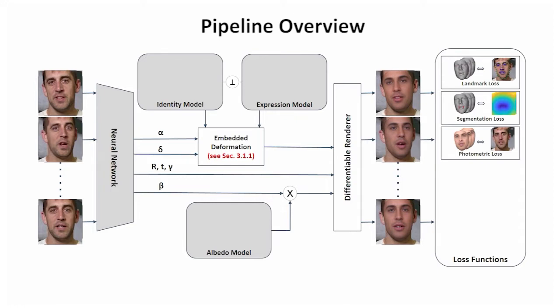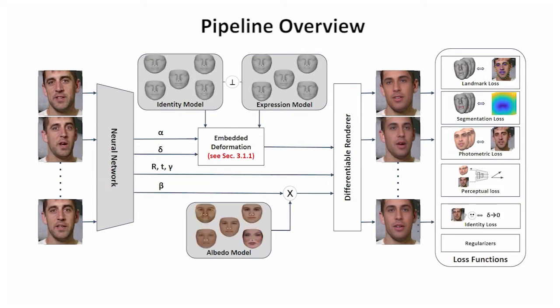Our loss functions compare these rendered synthetic images to the input. These loss functions include sparse keypoint alignment, dense photometric alignment, as well as a segmentation loss to enforce accurate projection of the lip contours. We also use a perceptual loss, which helps in reconstructing detailed albedo. Our network architecture combined with the loss function ensures disentanglement between the different models. Note that we do not need any 3D supervision to train our networks.